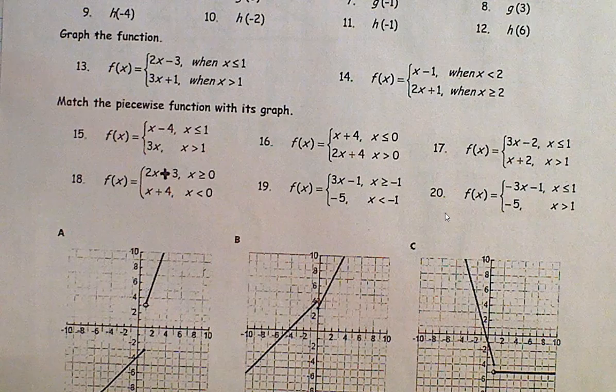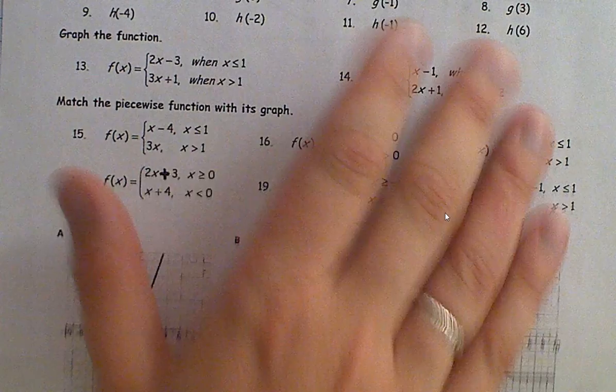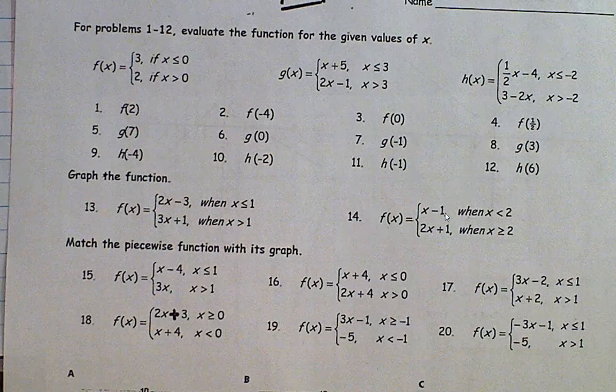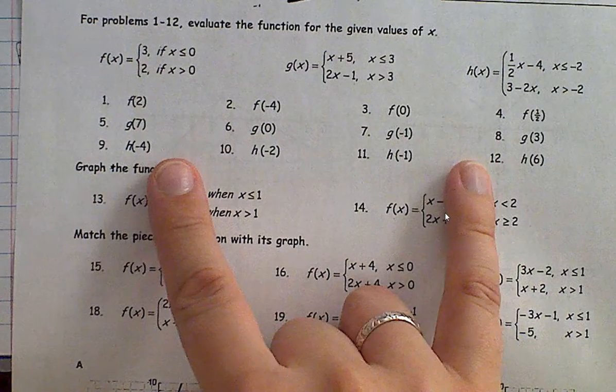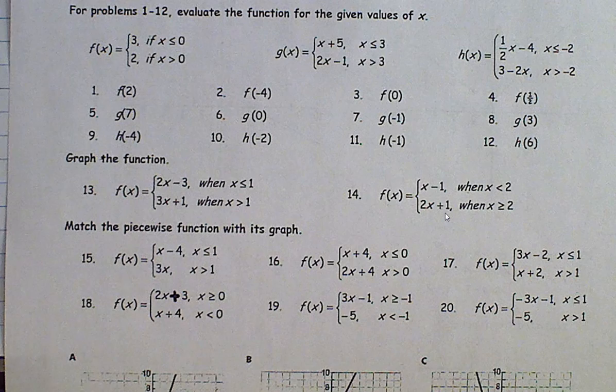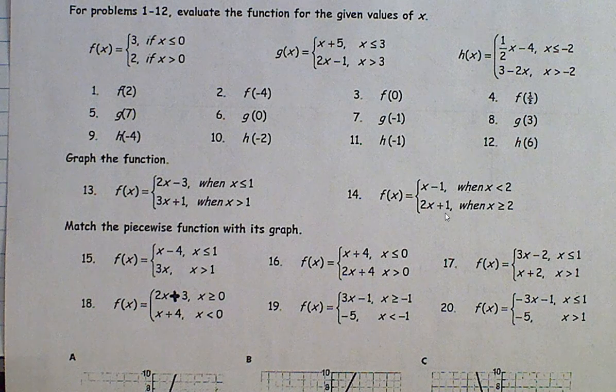Just a little bit about the way that 1 through 12 is laid out. You've got the three different functions, f, g, and h of x. And then you've got the different, so number one you're using the f function. Number nine you're using the h function. Give it a try.